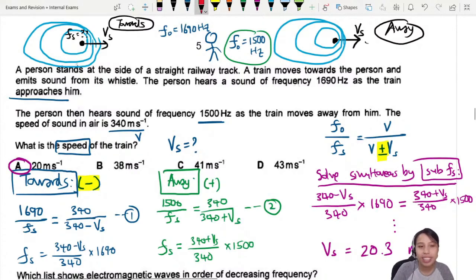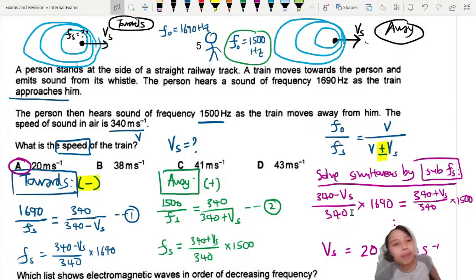This part I did a lot of gymnastics, rearrange, multiply, get the v_s together, then only I can find the answer. So this is 20.3. Once in a while, physics will ask you to do simultaneous equations like this, so be aware.